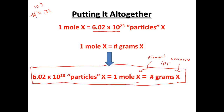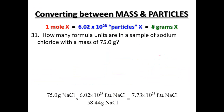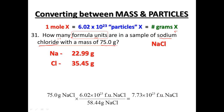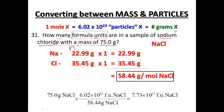We need 6.02 times 10 to the 23rd and our periodic table. Working through our first problem: how many formula units are in a sample of sodium chloride with a mass of 75 grams? Sodium is a metal and chlorine is a non-metal, so it's an ionic bond — they're formula units. Starting with 75 grams, we need to find the molar mass. NaCl: sodium is 22.99 grams, chlorine is 35.45 grams — one of each.